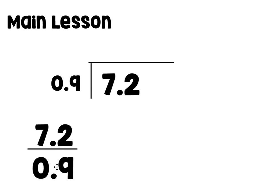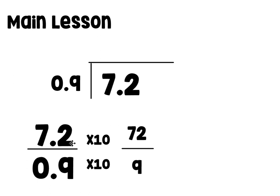Writing 7 and 2 tenths divided by 9 tenths as a fraction doesn't really help us yet. What we need to do is find an equivalent fraction where the decimals are removed. A couple of days ago we learned that if we multiply by a multiple of 10, the decimal moves one place value. So if we multiply by 10, 7 and 2 tenths becomes 72 — because it's in the tenths place, I only need to multiply by 10. Same thing for the bottom: 9 tenths multiplied by 10 gives us the whole number 9. So now our equivalent whole number division problem is 72 divided by 9.